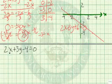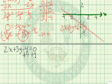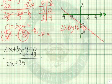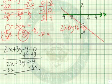Let's continue by doing the same thing with the second equation. Let's add 4 to both sides of the equation. 2x plus 3y equals 4. Let's subtract 2x from both sides of the equation. So we're left with 3y equals negative 2x plus 4.